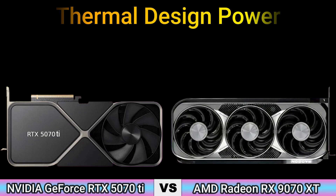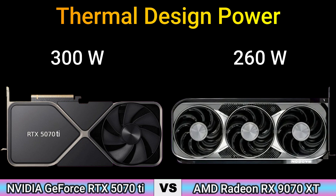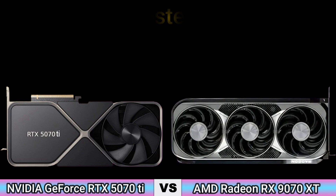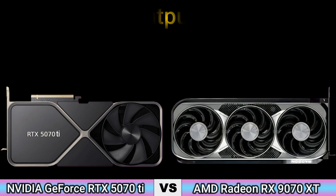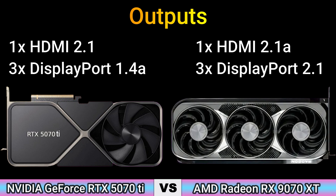Part 4 — General Information. Thermal design power: 300W and 260W. Suggested PSU: 700W and 600W. Outputs: 1x HDMI 2.1, 3x DisplayPort 1.4a and 1x HDMI 2.1a, 3x DisplayPort 2.1.